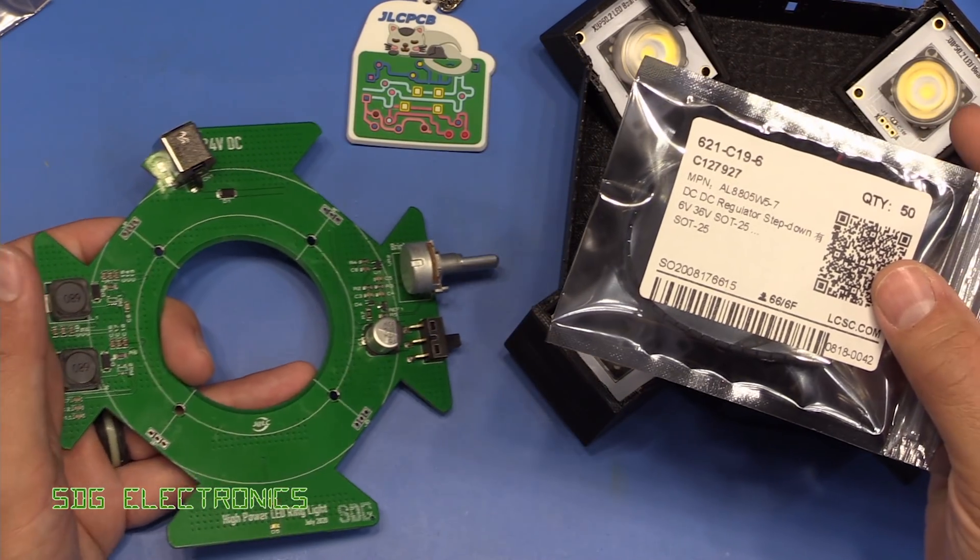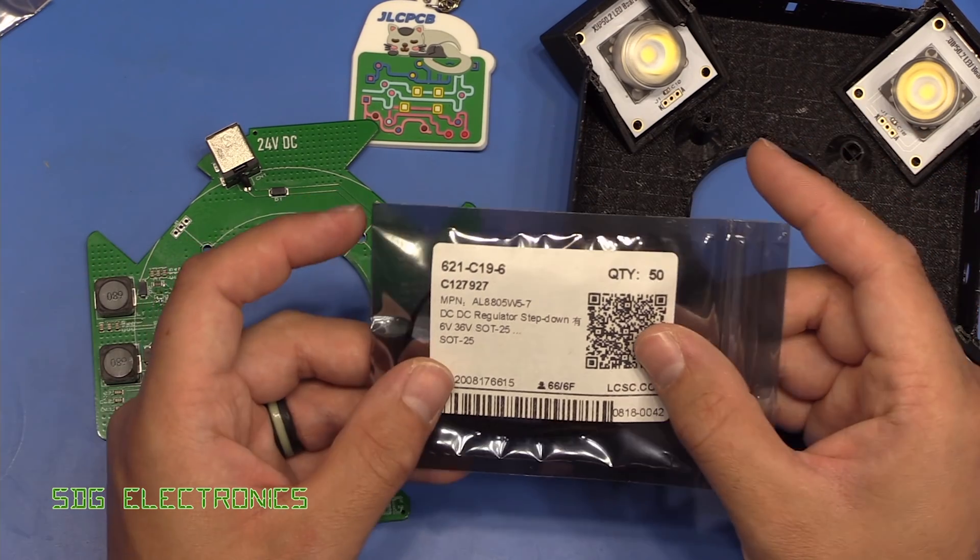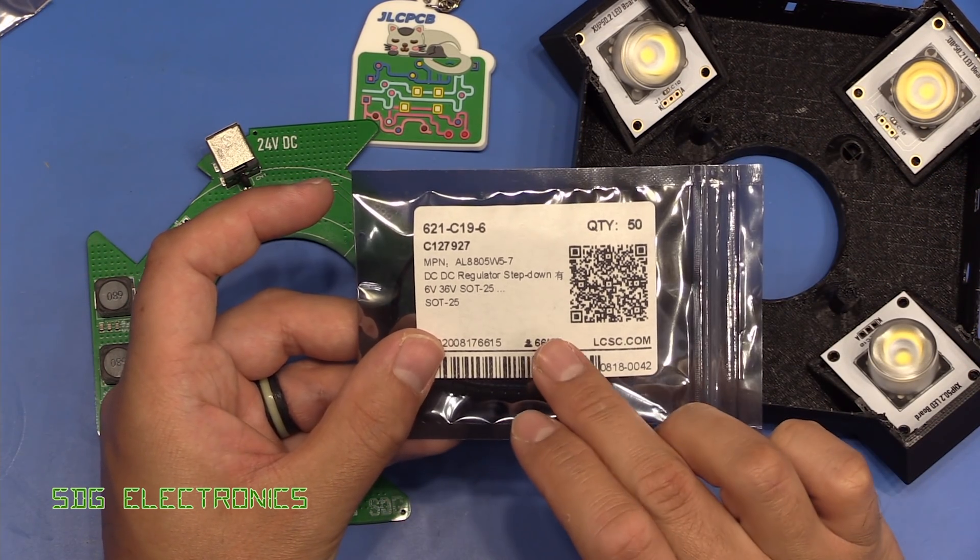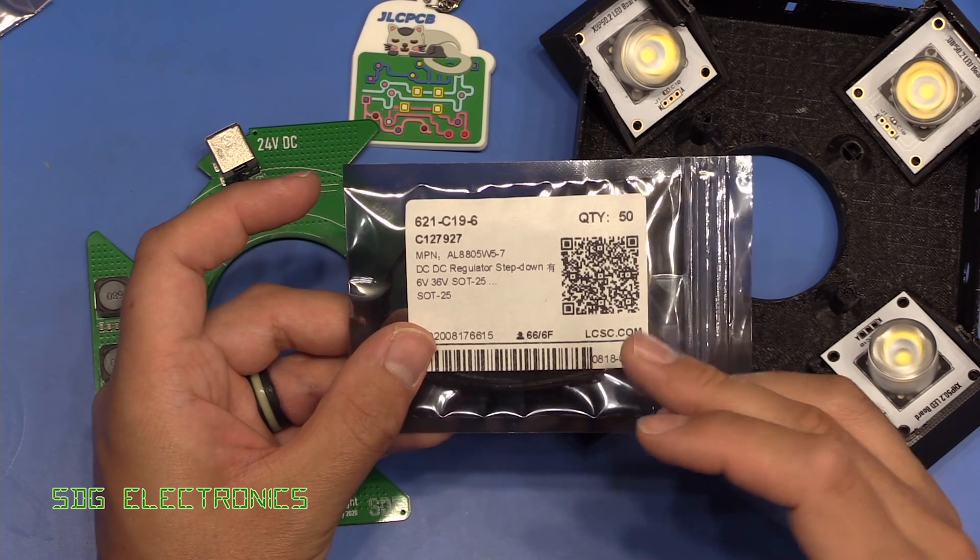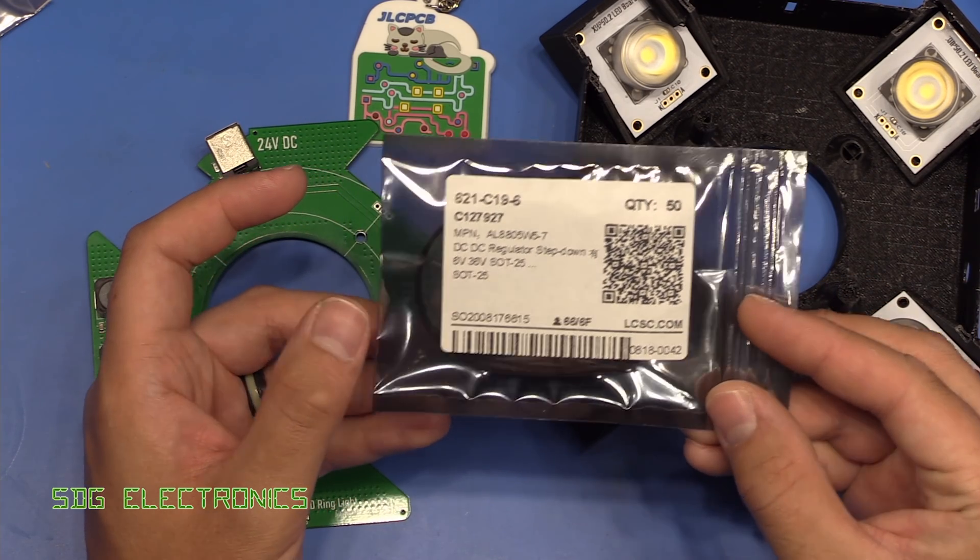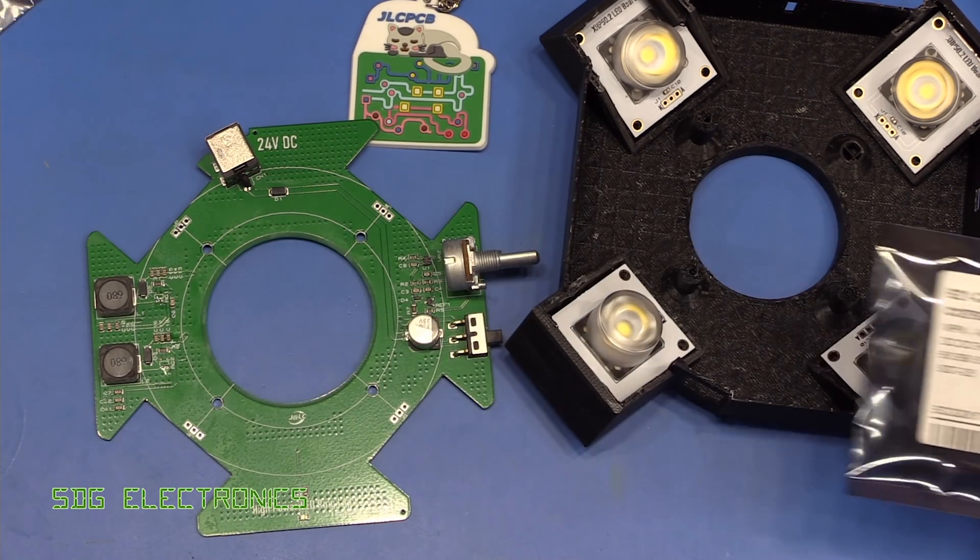So I did order some replacement AL8805s. But in the end, what I decided to do was not use these at all. Well, quite a few people actually mentioned that they had problems with these ICs, some of them failing randomly. I've decided not to use these parts at all.